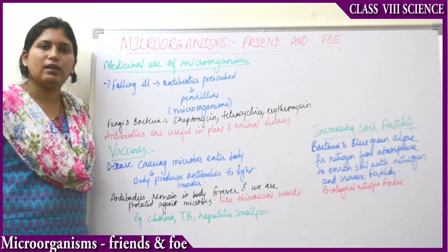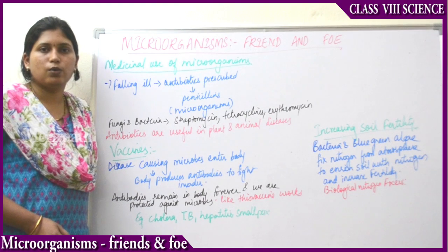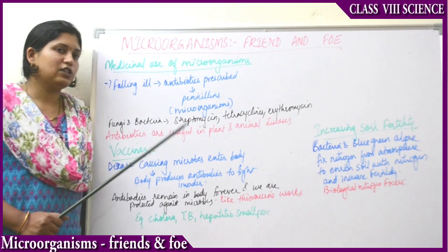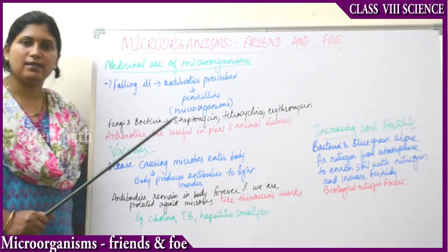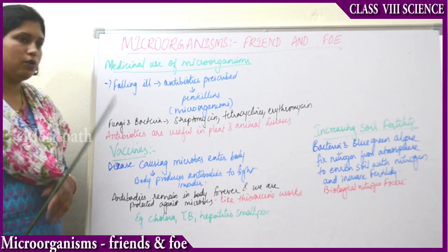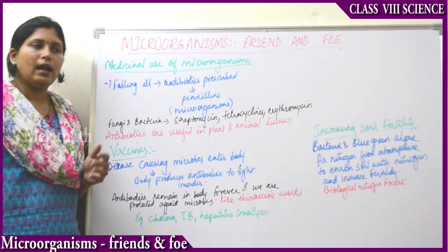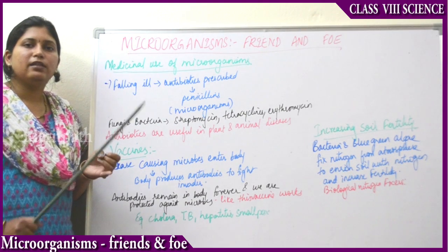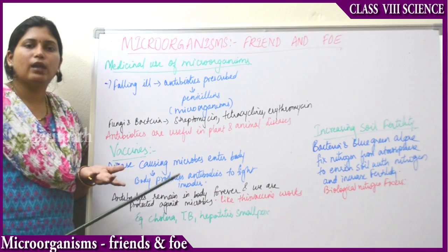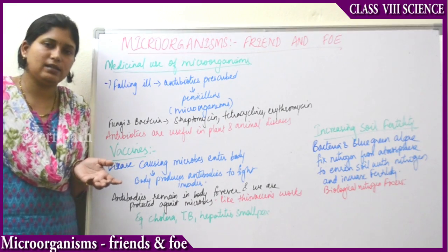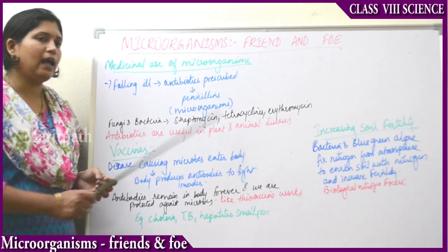For production of antibiotics, specifically microorganisms are grown separately for production of antibiotics — that is drugs, medicines. If any animal has any infection in the body, in their food they mix the antibiotics and give it to the animal for the healing of that disease. That is how antibiotics are useful in animal disease.